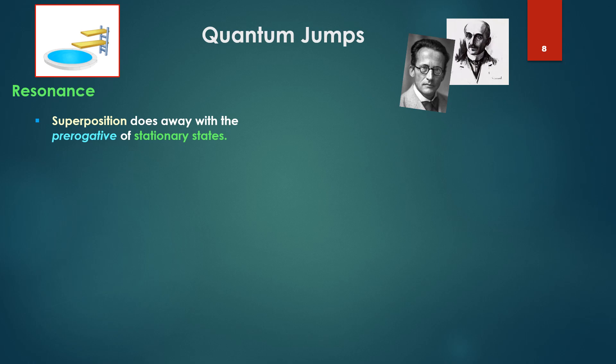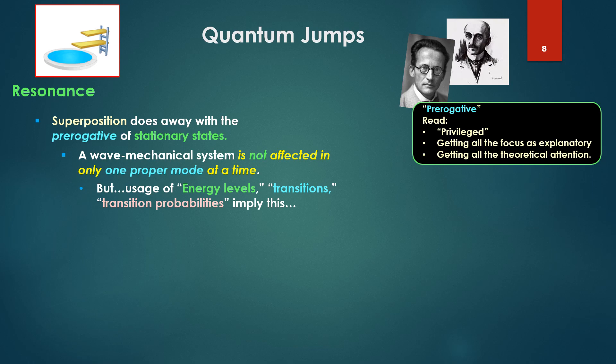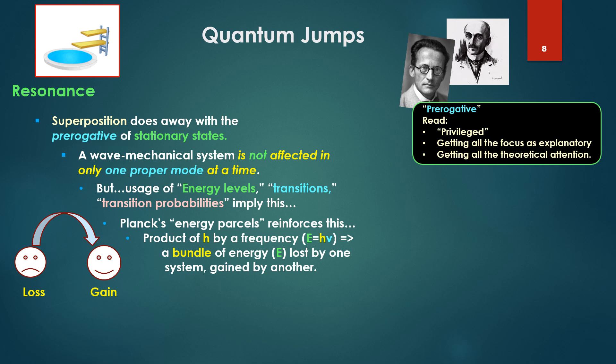For example, if I have two proper frequencies at 500 and 300, the difference is 200, and that's where I'll get the spectral line. Superposition does away with the prerogative of stationary states. Read prerogative as privileged, stationary states being privileged or getting all the focus as explanatory or getting all the theoretical attention.